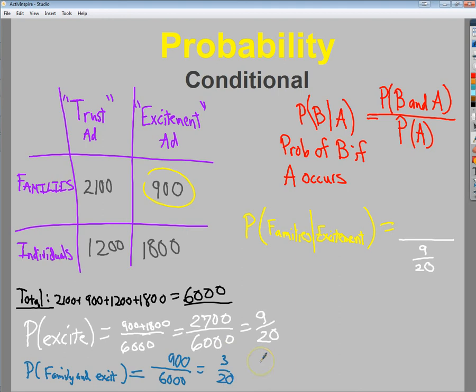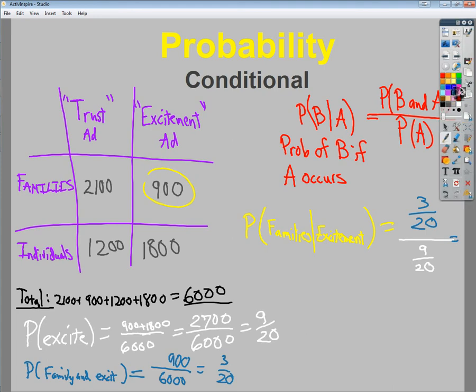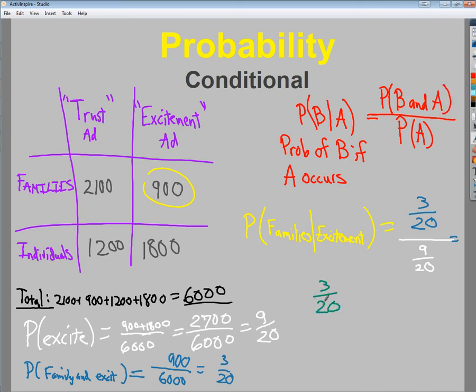I put that 3 over 20 right here in the numerator. So this is a division of fractions. I know that I should keep that first fraction. Flip the second one. So keep it, flip it, switch it. And then switch it to multiply. So the 20s cancel.